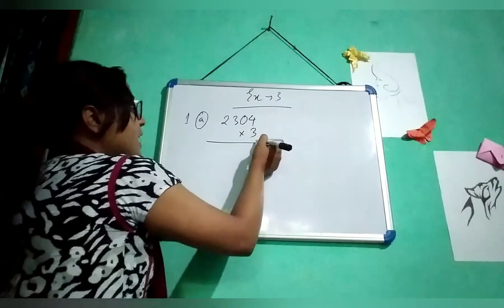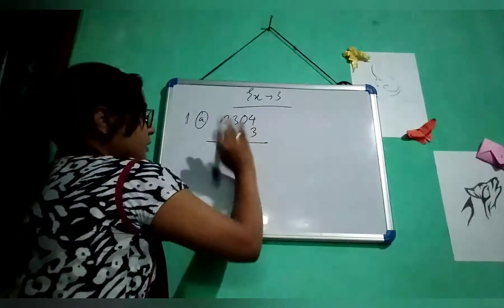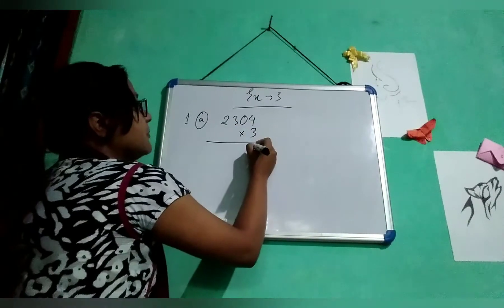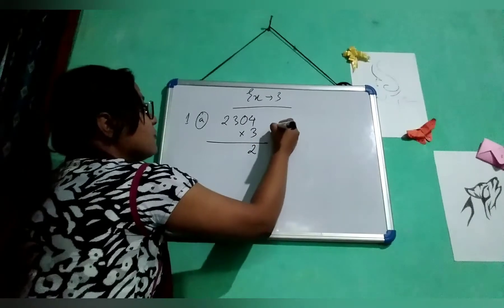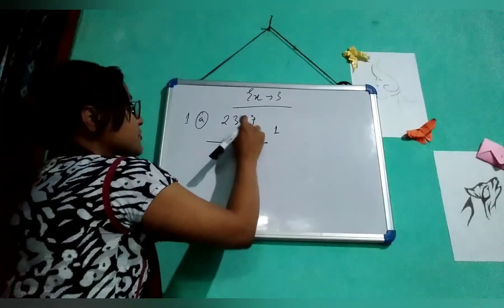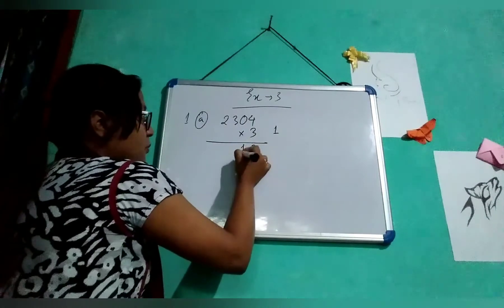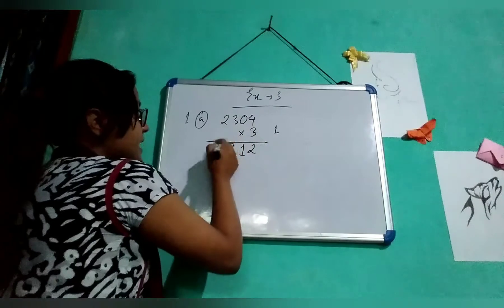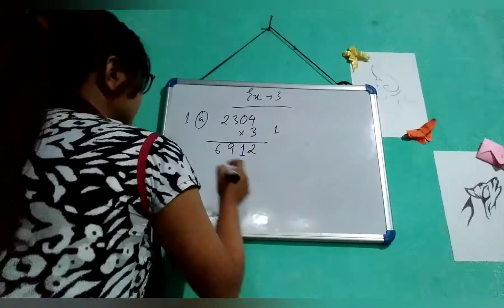So we will go from the last digit. 4 into 3 will be 12, so 2 and 1 will be carry. 0 into 3 is 0, 0 plus 1 is 1. 3 times 3 is 9. 2 times 3 is 6. So it is 6912.